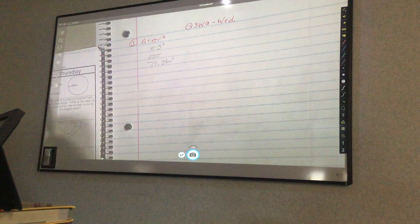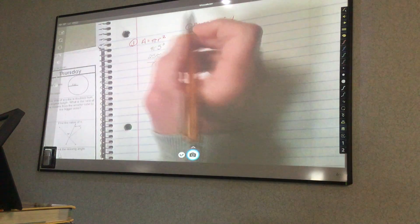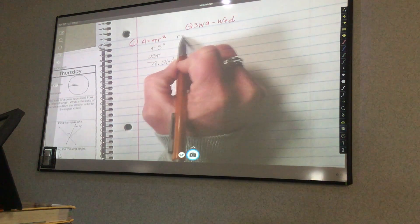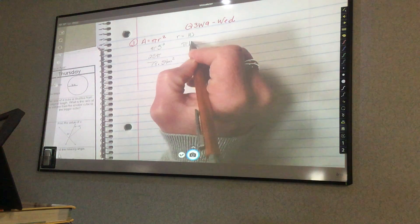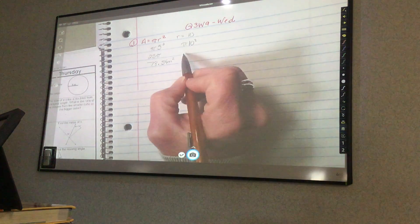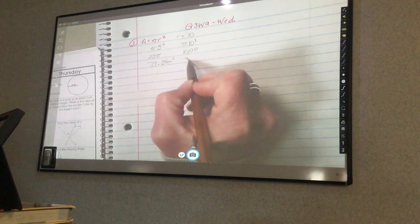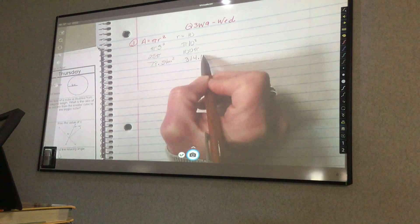Then it says if you double the radius, what would the new area be? So now my radius is going to be 10. So then it is pi times 10 squared, which is 100 pi, which is 314.16.